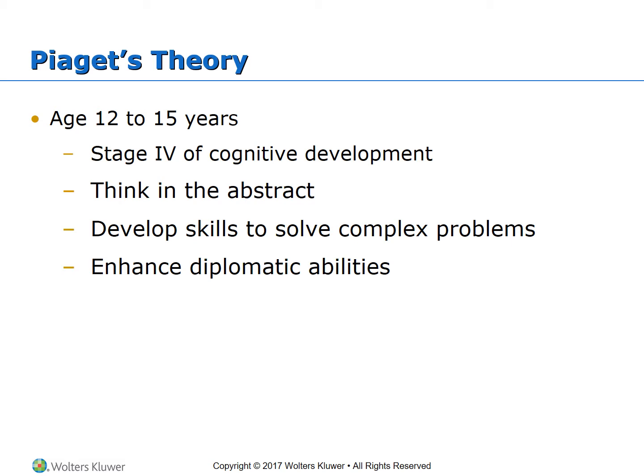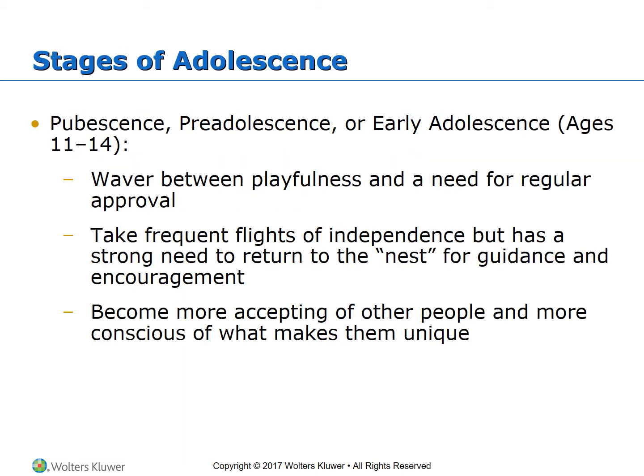Erikson's theory: the major challenge of adolescence is the achievement of identity — who am I, where am I going, with whom, and how am I going to get there. Stages of adolescence: we have pubescence, and pre-adolescence or early adolescence.